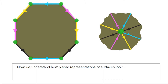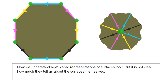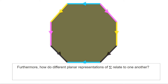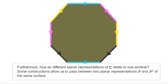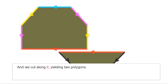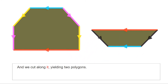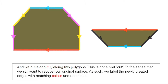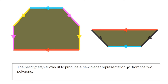Our next goal is to understand how to manipulate planar representations — specifically, how different planar representations of the same surface relate to one another. To this end, we explain some surgery constructions. The first is called cutting and pasting. In the cutting step, we choose one of the diagonals of the polygon and cut along it, producing two smaller polygons. This cut does not change the surface, only the representation; we remember the cut because the two copies of the diagonal are colored the same way with orientations telling us how to glue.